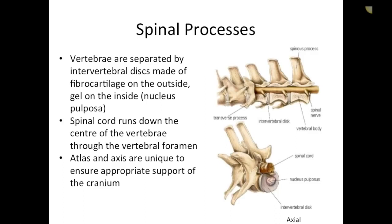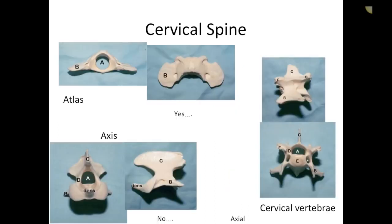The vertebrae are separated by intervertebral discs made of fibrocartilage on the outside and gel on the inside. The spinal cord runs down the center of the vertebrae through the vertebral foramen. The atlas and axis are unique to ensure appropriate support for the cranium. The cervical spine, the most cranial aspect of the spine, has seven vertebrae — every mammal has seven, including giraffes, which just have seven very large ones.